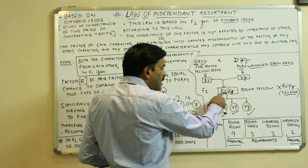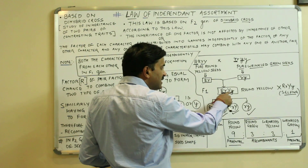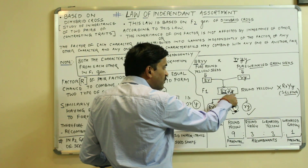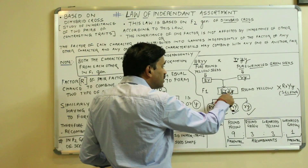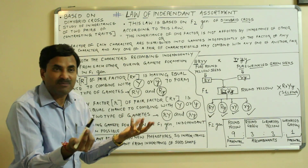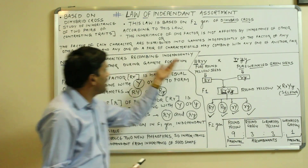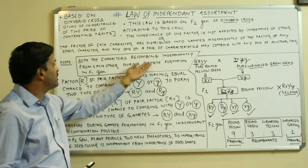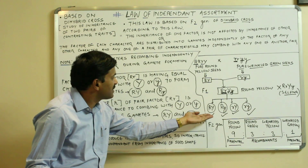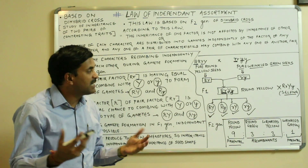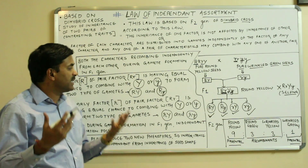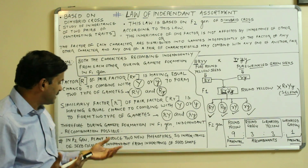So capital R and small r are for round and wrinkled seed respectively, and capital Y is for yellow color while small y is for green color. Both characters have recombined independently from each other during gamete formation in the F1 generation. We can strictly see that they have recombined independently, and that is why this law is also called the law of independent assortment.